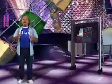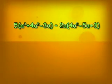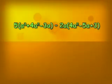All right, one more problem that puts it all together. 5 times the quantity a³ + 4a² - 3a minus 2a times the quantity 4a² - 5a + 3.